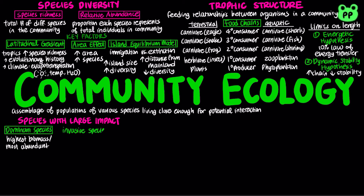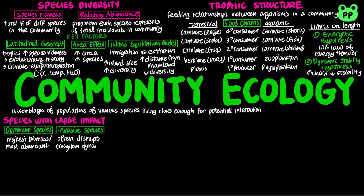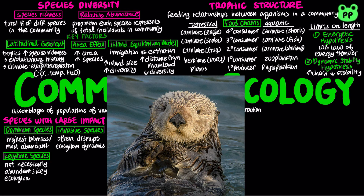Invasive species, typically introduced to a new environment by humans, often lack predators or disease pathogens. Therefore, they often disrupt ecosystem dynamics by out-competing or displacing native populations. Keystone species exert strong control on the community through their ecological roles, despite not necessarily being abundant in the community. For example, sea otters are keystone predators in the North Pacific.